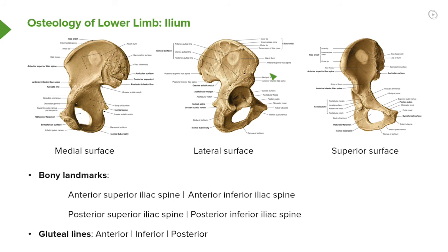Looking at the lateral surface of the ileum, it gives rise to attachments for gluteus maximus. To be comfortable with these attachments, we need to be aware of some gluteal lines. Here we can see a series of gluteal lines — anterior, inferior, and posterior. Here is the anterior gluteal line, here an inferior gluteal line running alongside the body of the ileum, and here a posterior gluteal line running alongside the posterior iliac spines. These gluteal lines are important as we look at the attachment sites of the gluteal muscles.